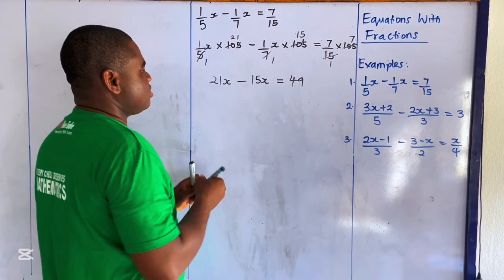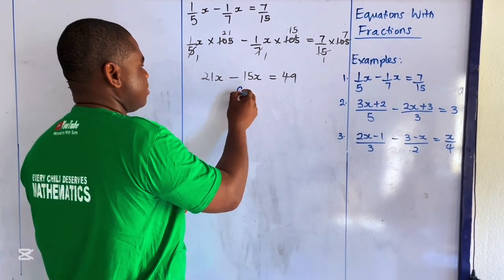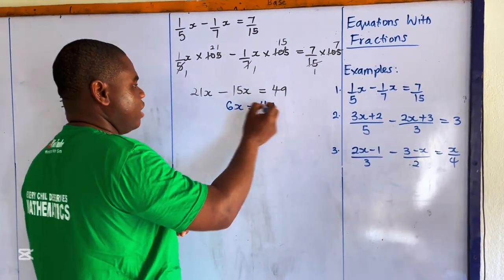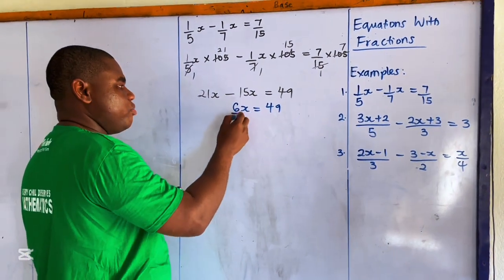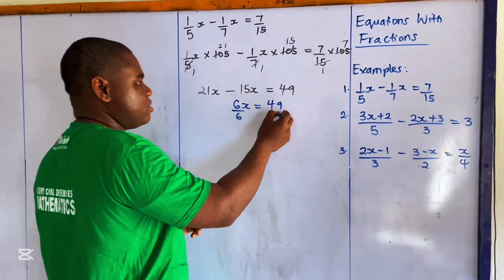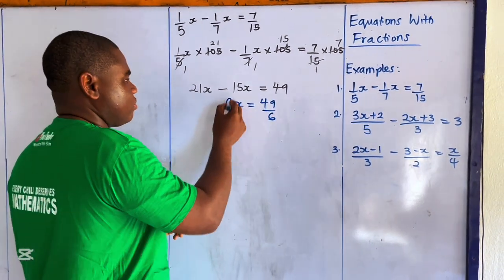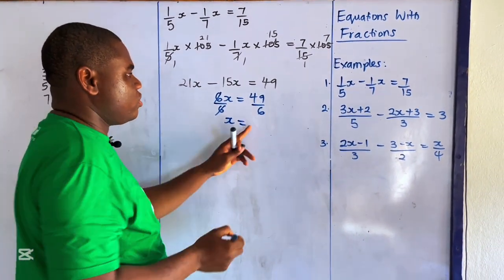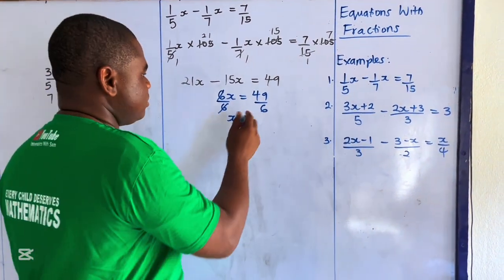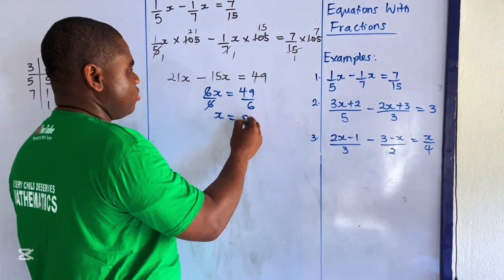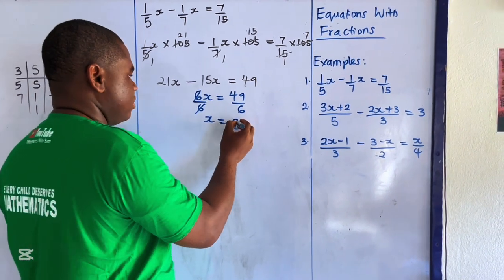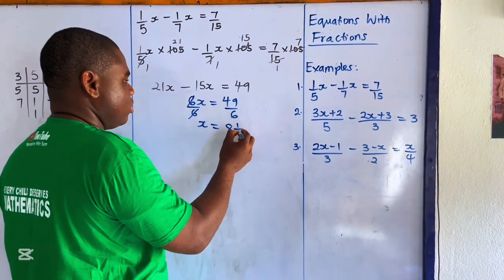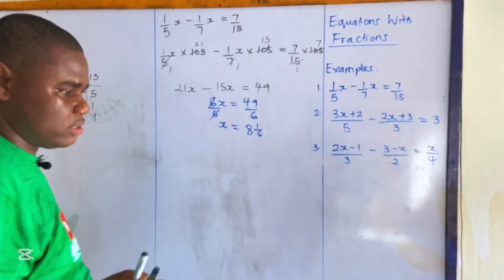So 6x equals 49. Dividing both sides by 6, x equals 49 over 6, which is 8 and one-sixth.